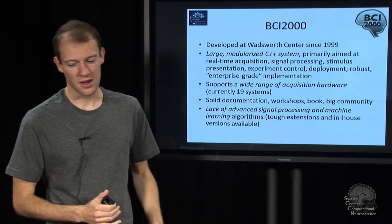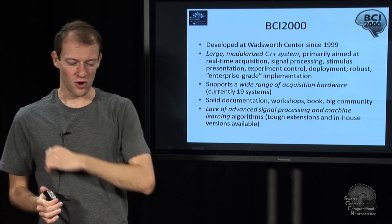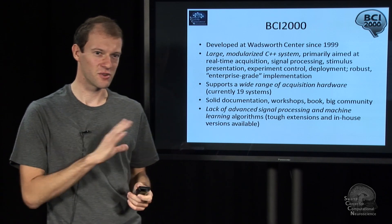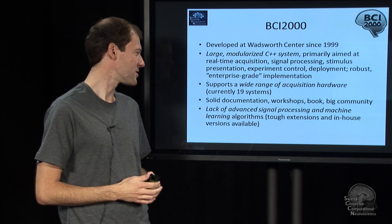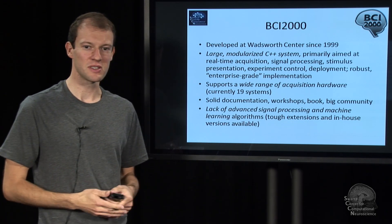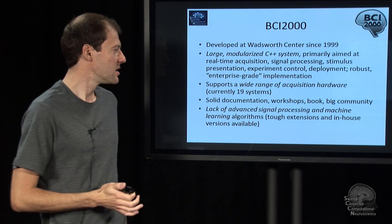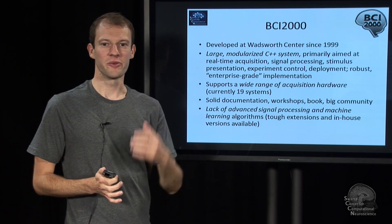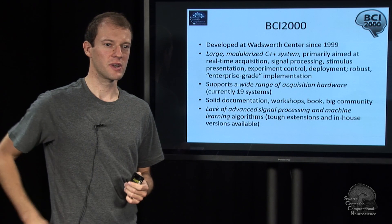BCI-2000 lets you do certain kinds of simple things, and then you can go on and do the rest yourself. It doesn't provide you with everything you need for advanced methods research.